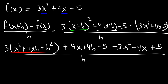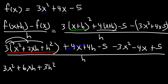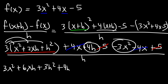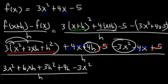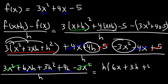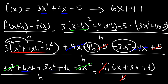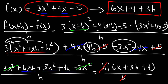Now distributing the 3 gives 3x squared plus 6xh plus 3h squared. We can cancel 4x and negative 4x, and cancel negative 5 and 5, leaving 4h. And 3x squared and negative 3x squared cancel. The remaining terms — 6xh, 3h squared, and 4h — each contain an h, so we factor out h, giving h times the quantity 6x plus 3h plus 4. Canceling h, the final answer is 6x plus 3h plus 4. That's the difference quotient of 3x squared plus 4x minus 5.